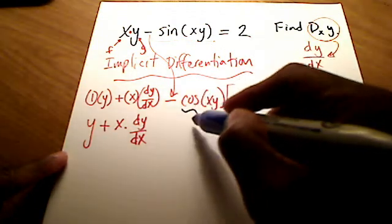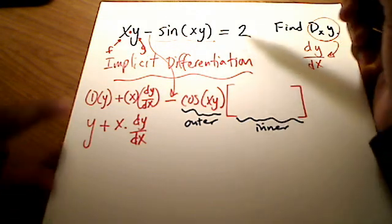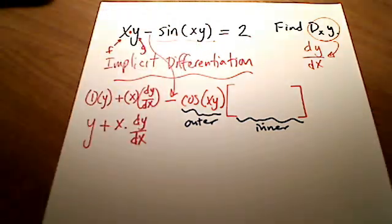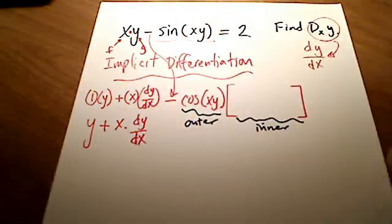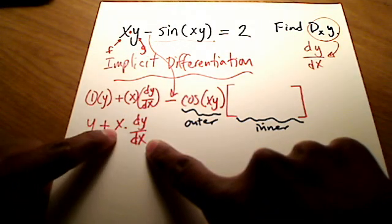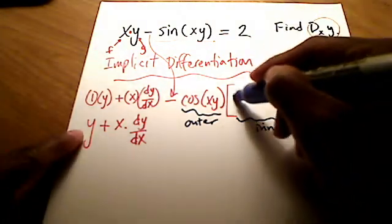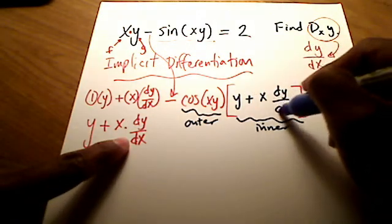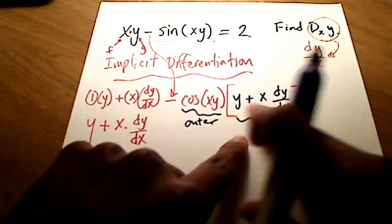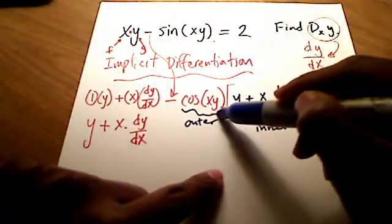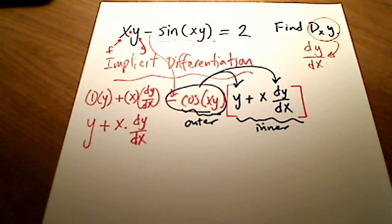The chain rule says: derivative of the outer times the derivative of the inner. The inner function is xy, and I want its derivative. I just found that a moment ago — it's y plus x times dy/dx. So the derivative of the inner has two terms in it. I'm going to multiply what's in front by both of these terms inside the brackets.